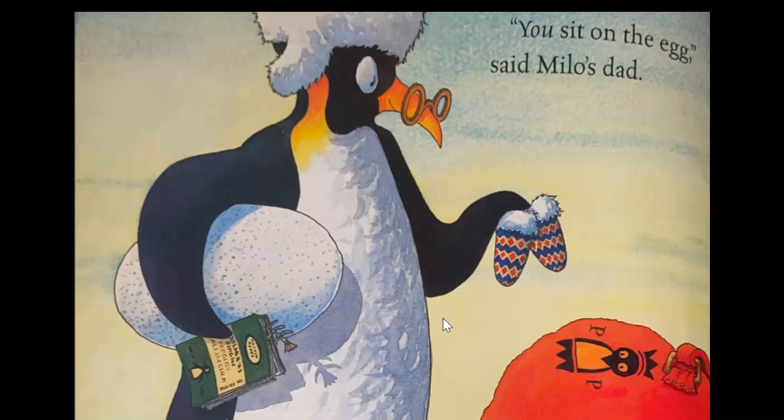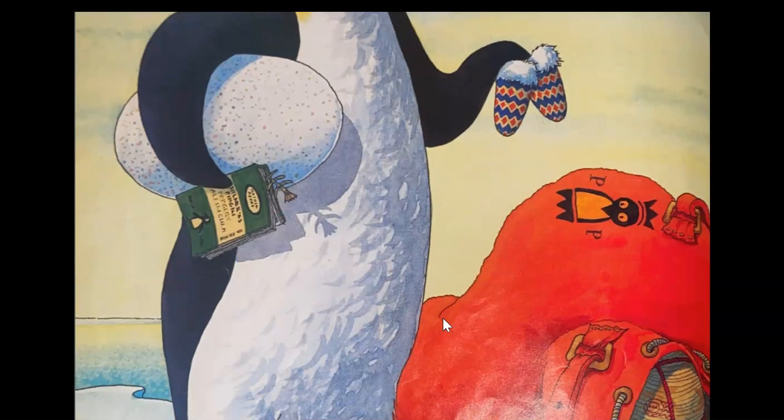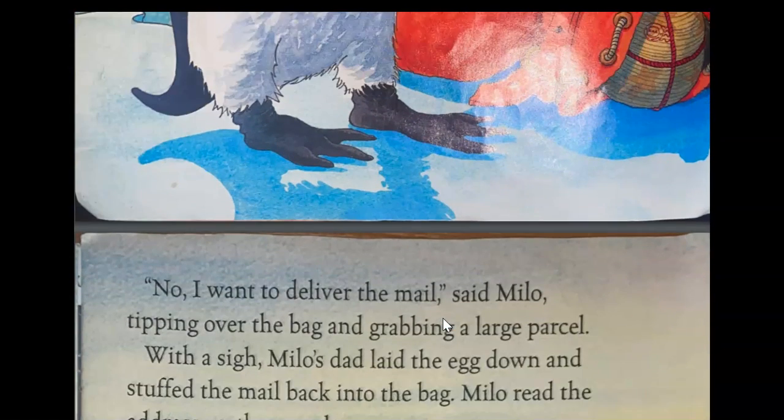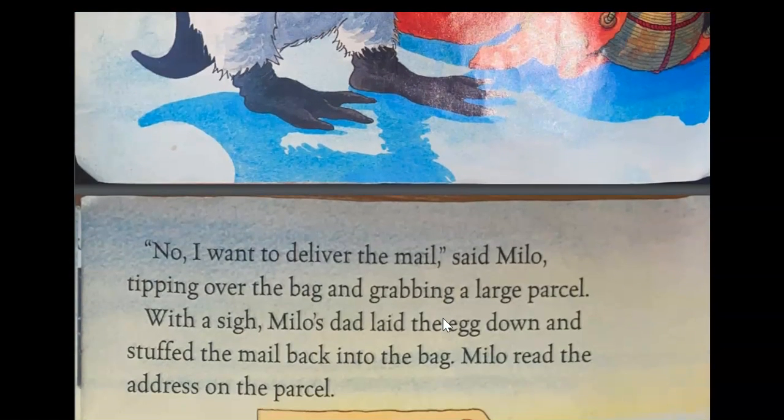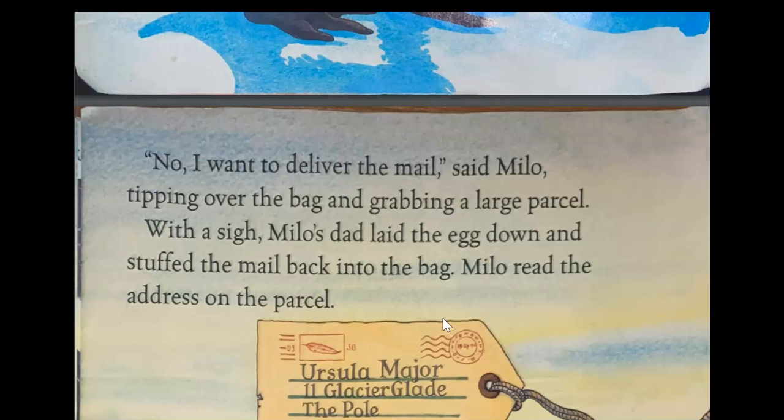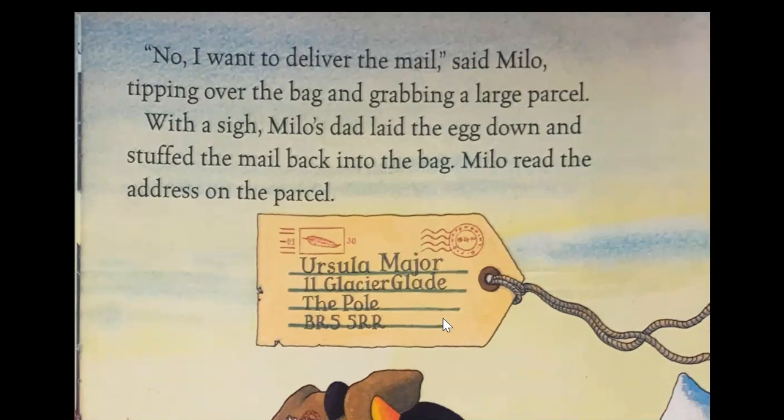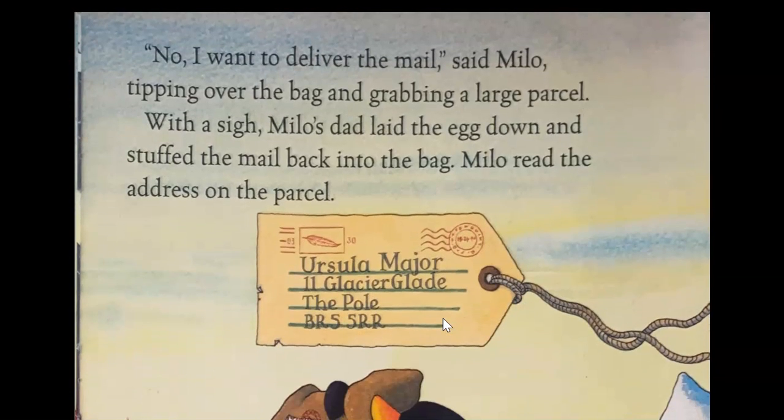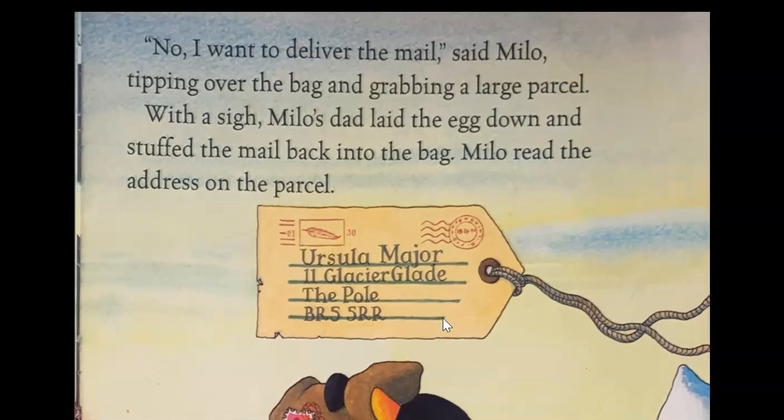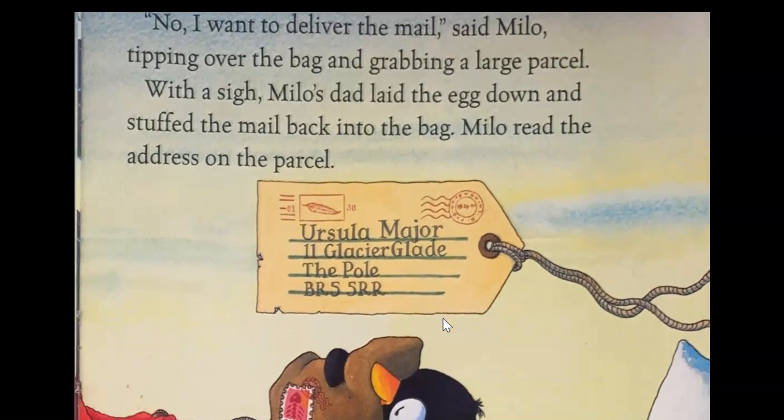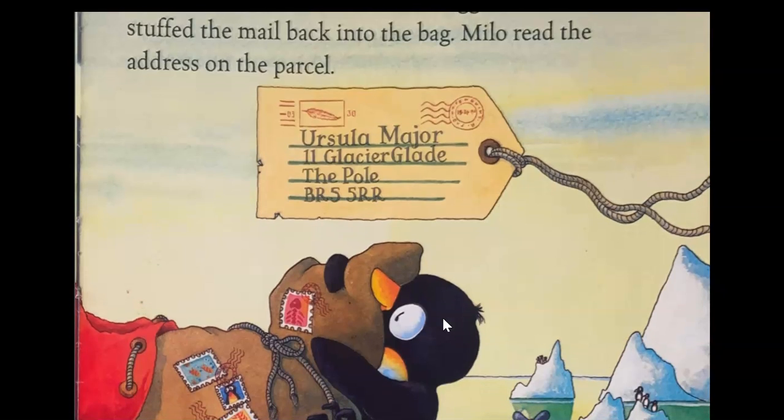You sit on the egg, said Milo's dad. No, I want to deliver the mail, said Milo, tipping over the bag and grabbing a large parcel. With a sigh, Milo's dad laid the egg down and stuffed the mail back in the bag. Milo read the address on the parcel: Ursula Major, 11 Glacier Glade, The Pole, BR5 5RR.